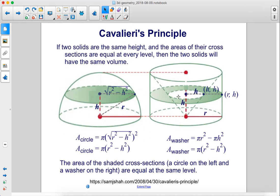As you can see in this example here, the area of the shaded cross sections, which is a circle on the left and a washer on the right, are equal at the same level. We calculate the area of the circle and the area of the washer, and they are the same.